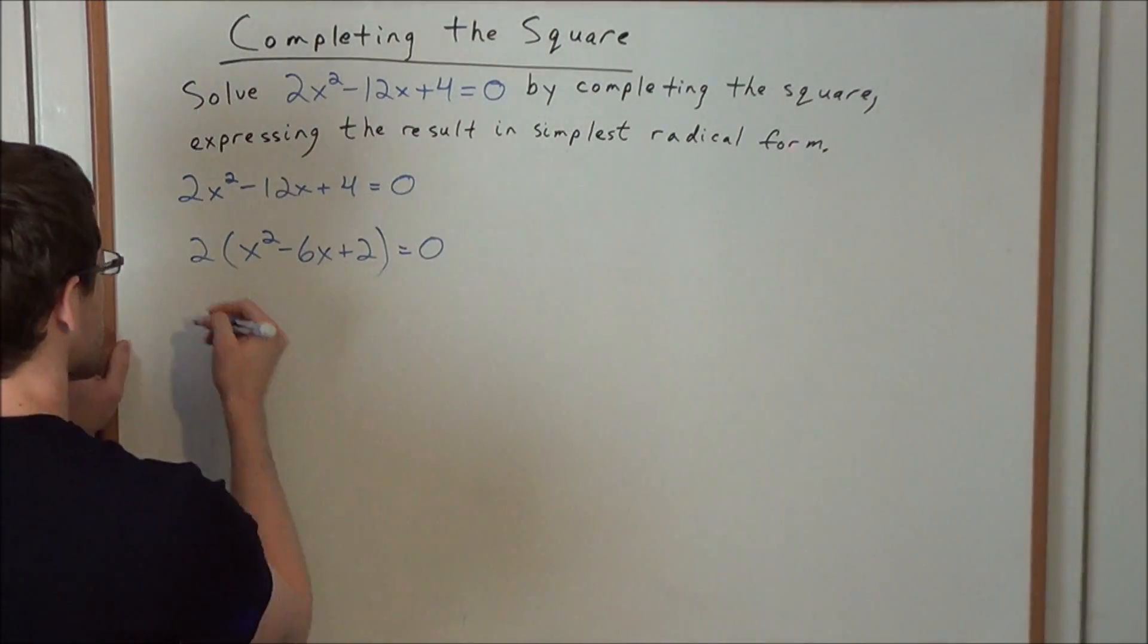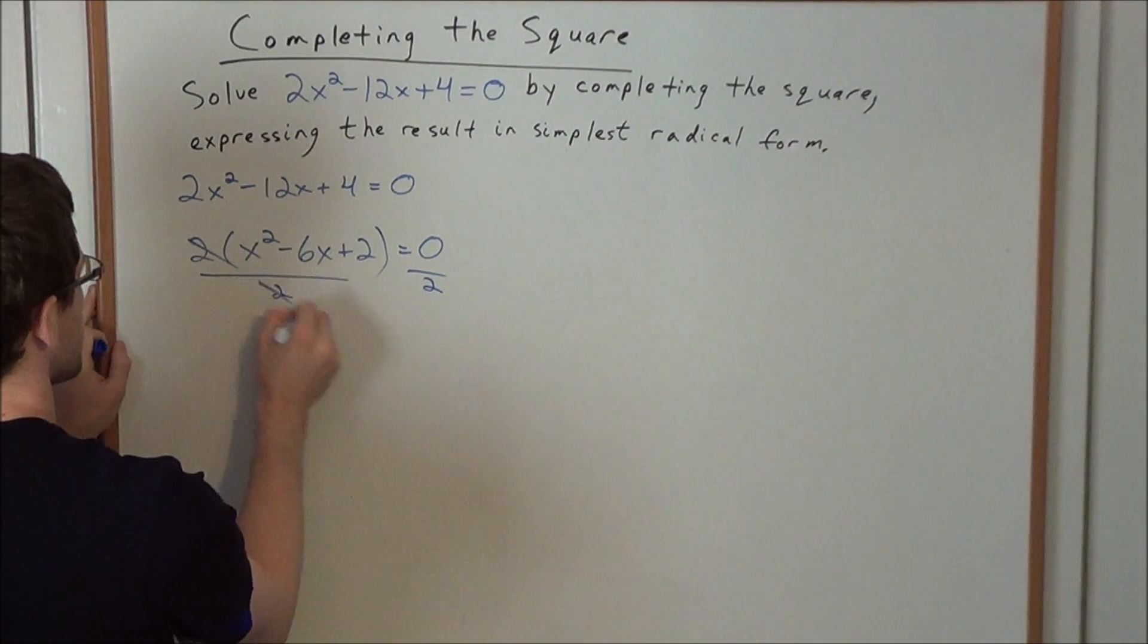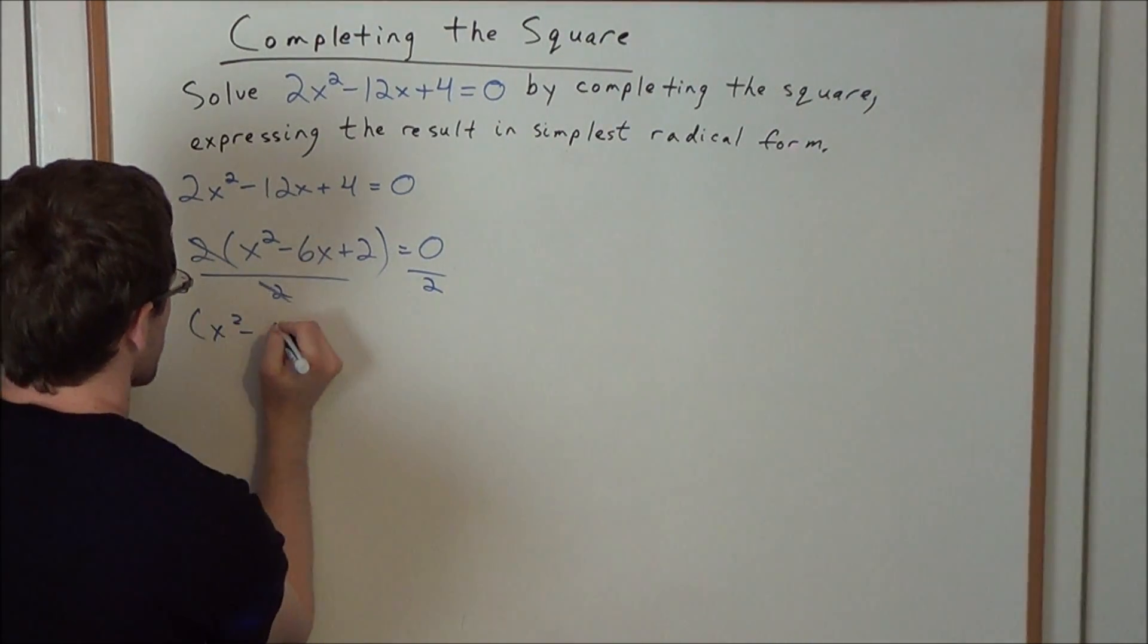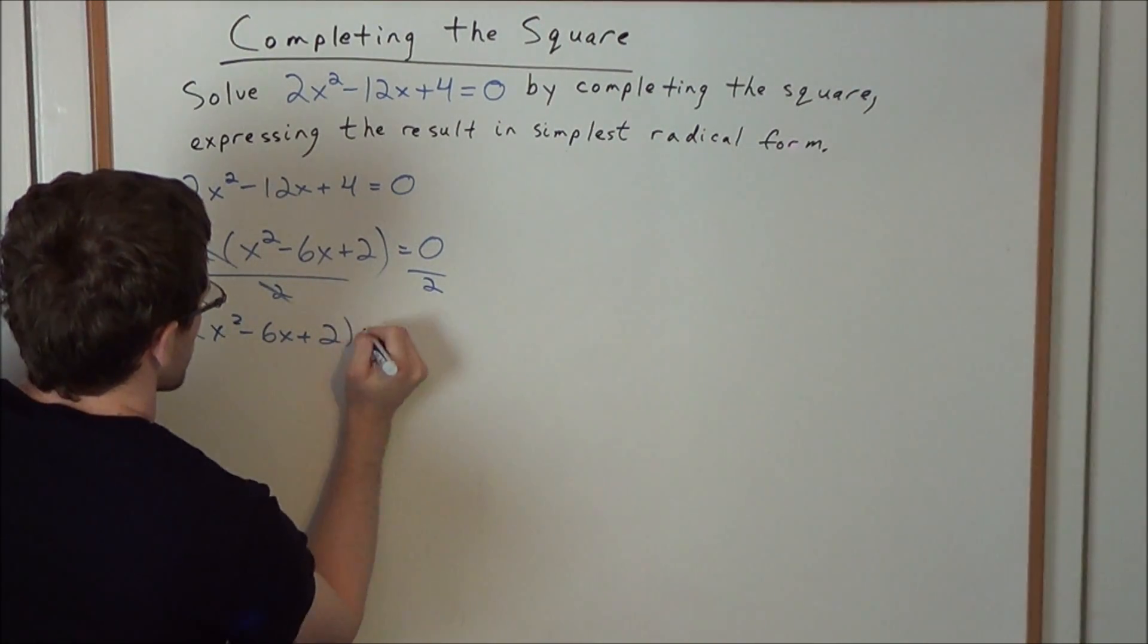So now, to get rid of this 2, all we need to do is divide both sides by 2. We have that these 2's will cancel, which tells us that we have x² - 6x + 2 = 0.